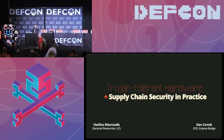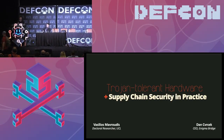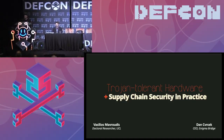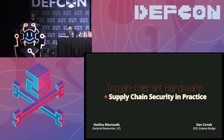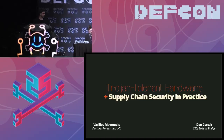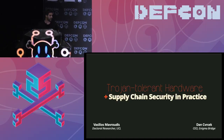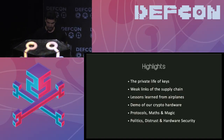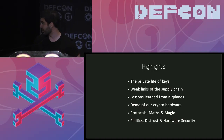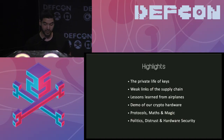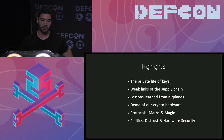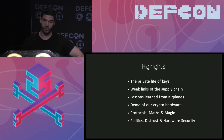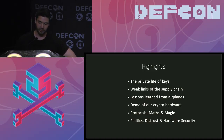Thank you for coming today. Our talk is on hardware tolerant hardware - that's tolerant on Trojans. We're going to talk a little bit more on that and supply chain security in practice. The highlights of this talk: we start first discussing the private life of keys, there are also some weak links on the supply chain, we have some lessons learned from airplanes, and then we'll see how we can transfer this to crypto hardware.